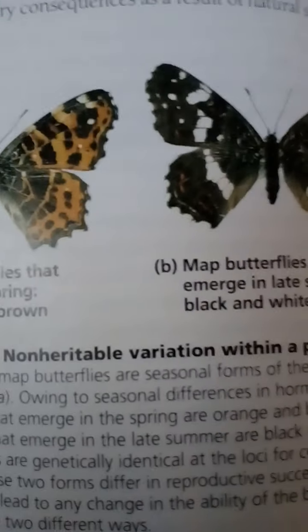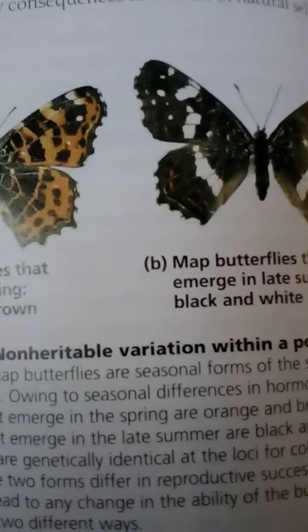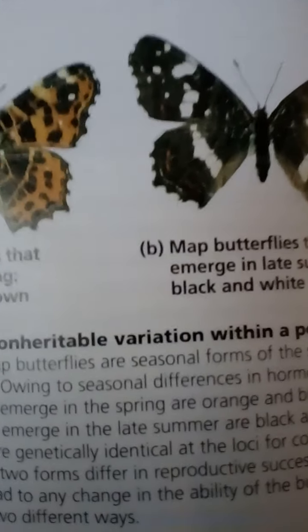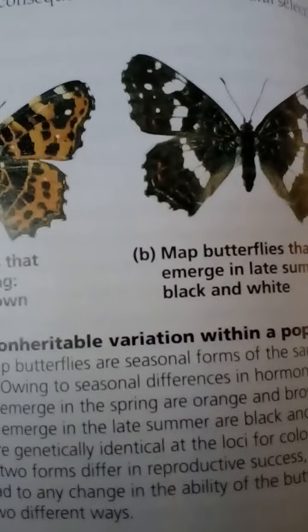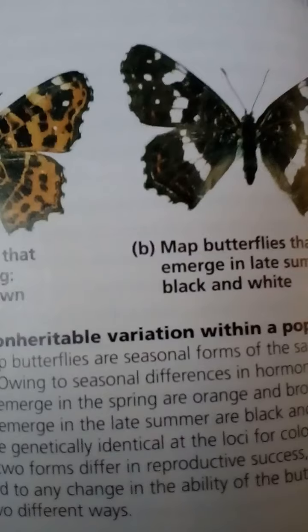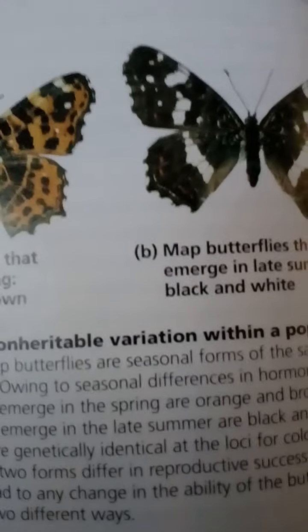However, most heritable variation consists of quantitative characters that vary along a continuum within a population. Heritable quantitative variation results from the influence of two or more genes on a single phenotypic character.